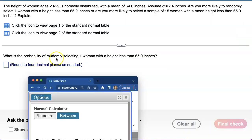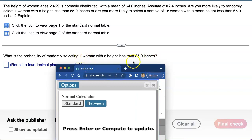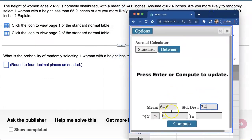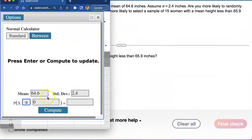What is the probability of randomly selecting one woman with the height less than 65.9 inches? For just one woman case, we're going to use this mean of 64.6 and standard deviation that they gave us. And what did they want? Less than. I'll change it to less than 65.9 inches.